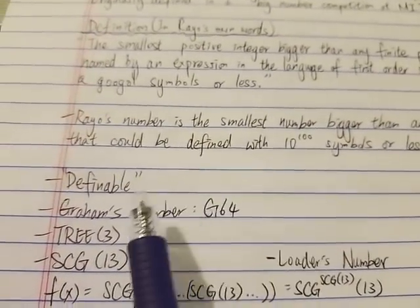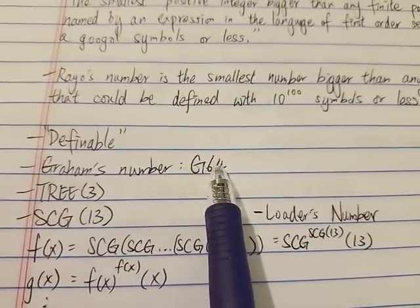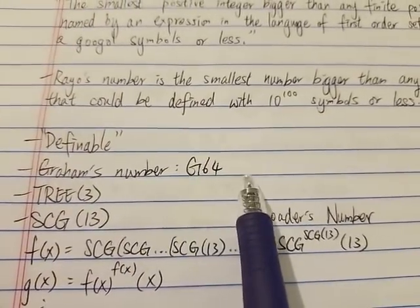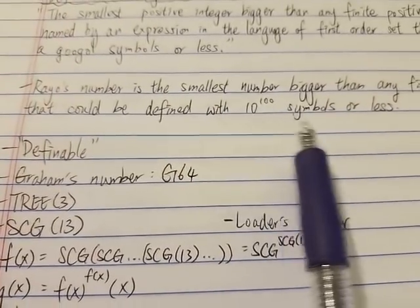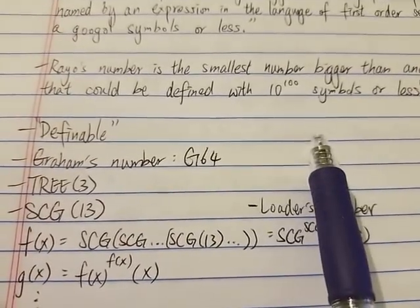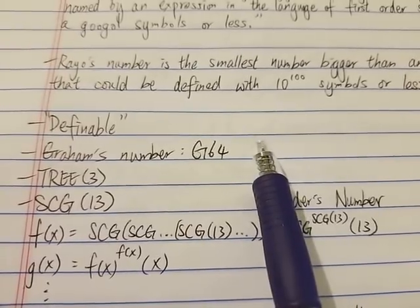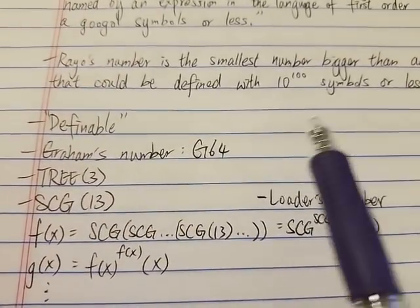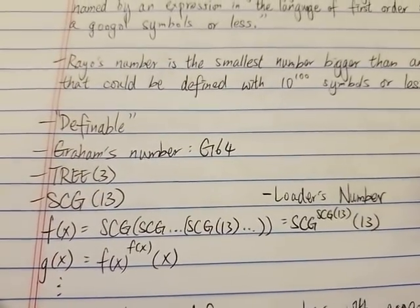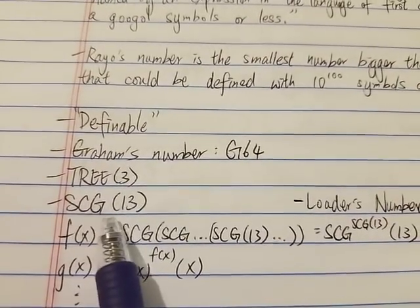For example, let's look at some big numbers like Graham's number, G64. It is obvious that Graham's number could be defined with less than a googol symbols. Basically, you can look at the Wikipedia article. I think Graham's number could easily be defined with less than a couple hundred symbols or even way less than that. Same thing for TREE(3) and also SCG(13).